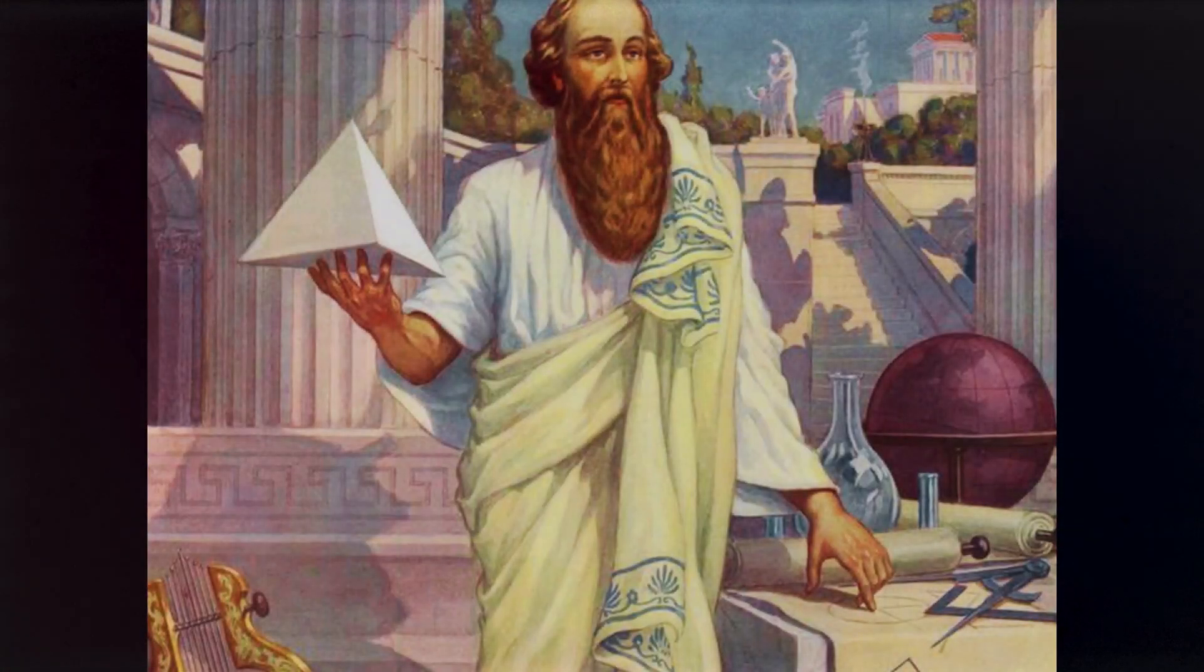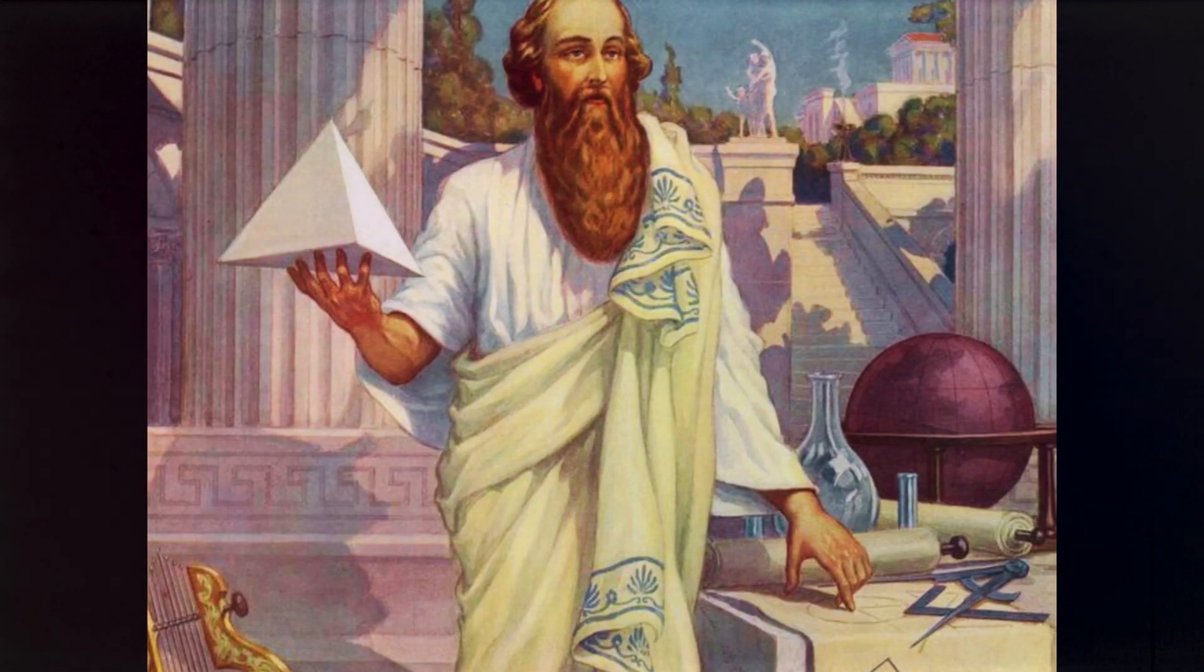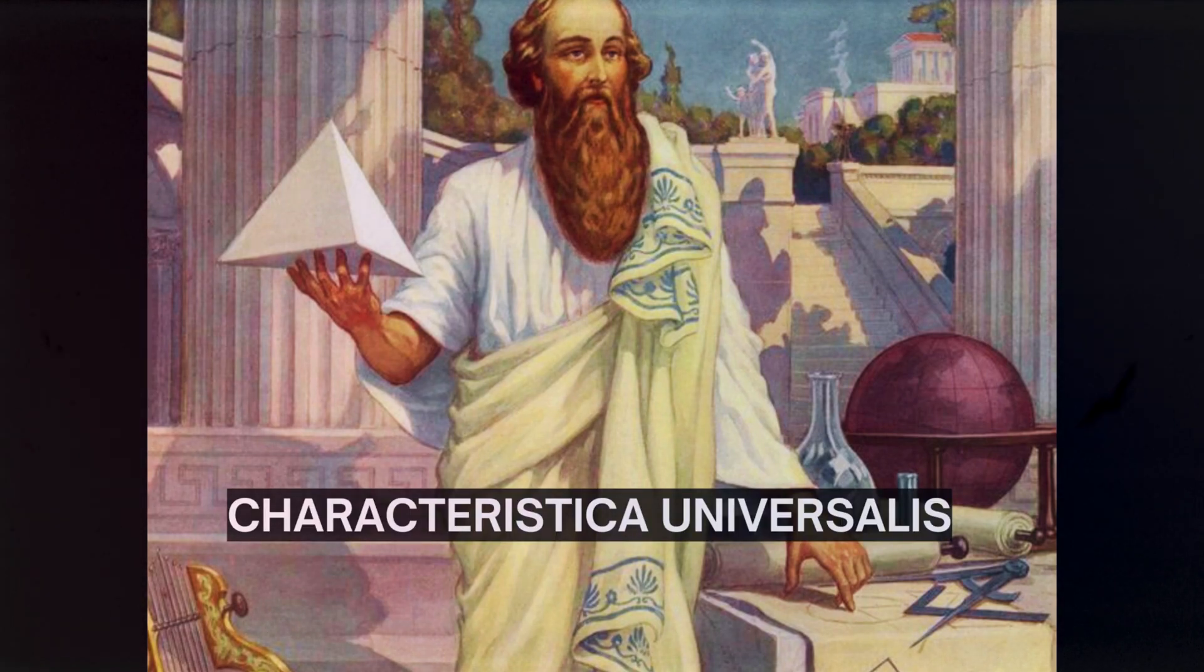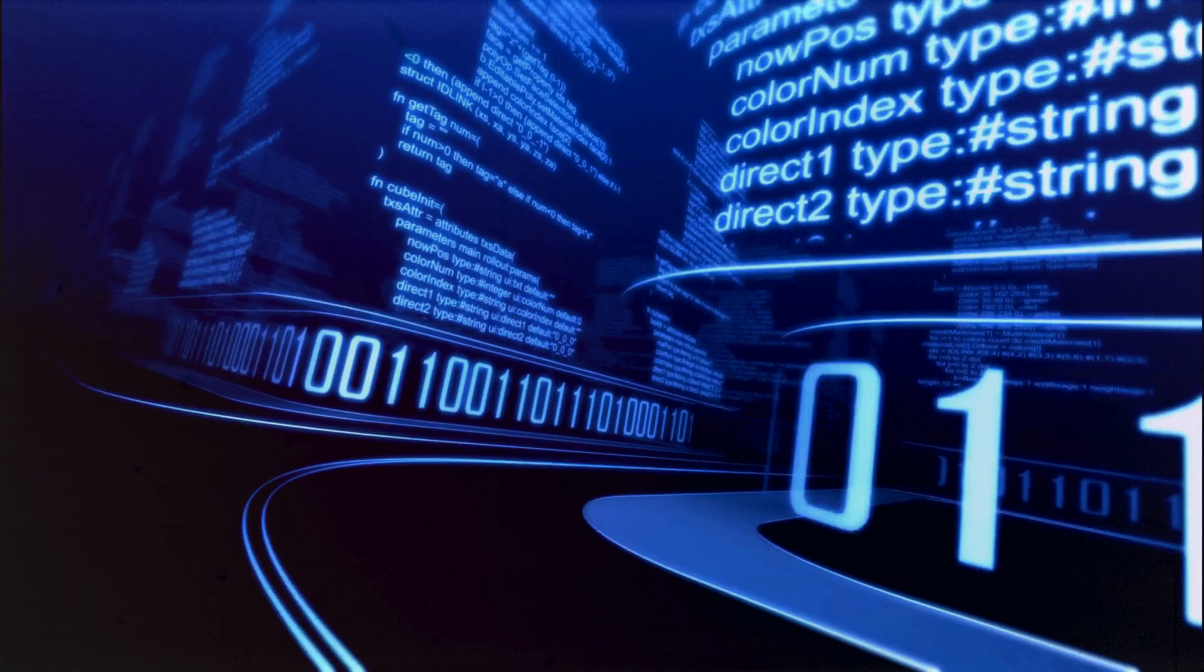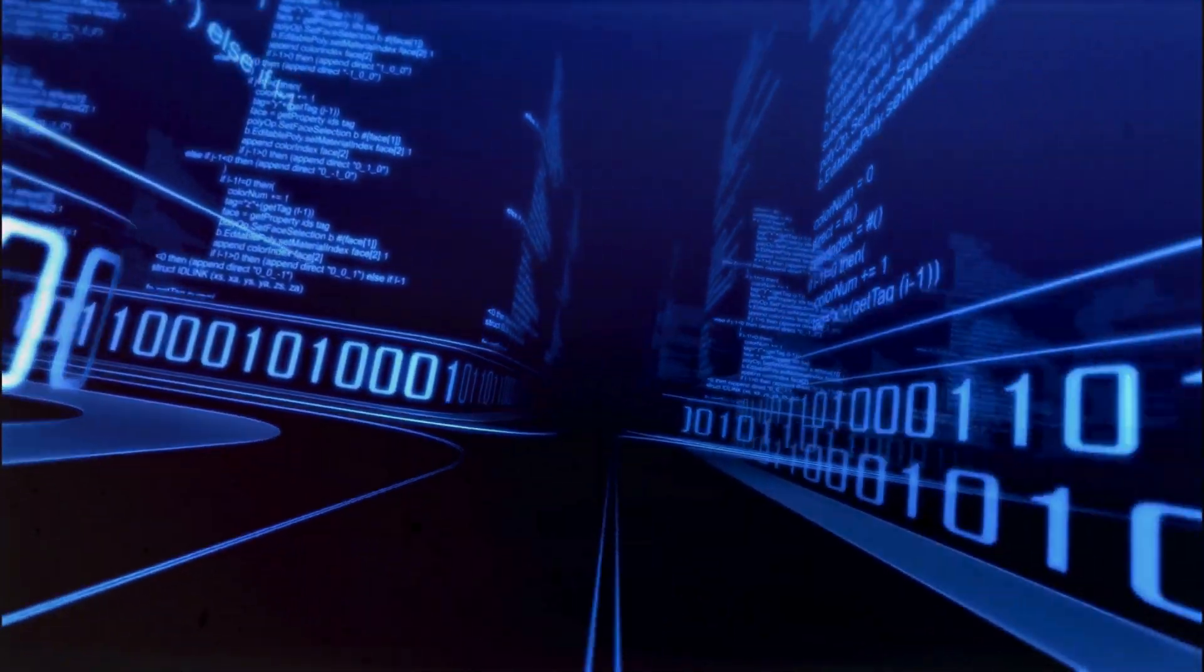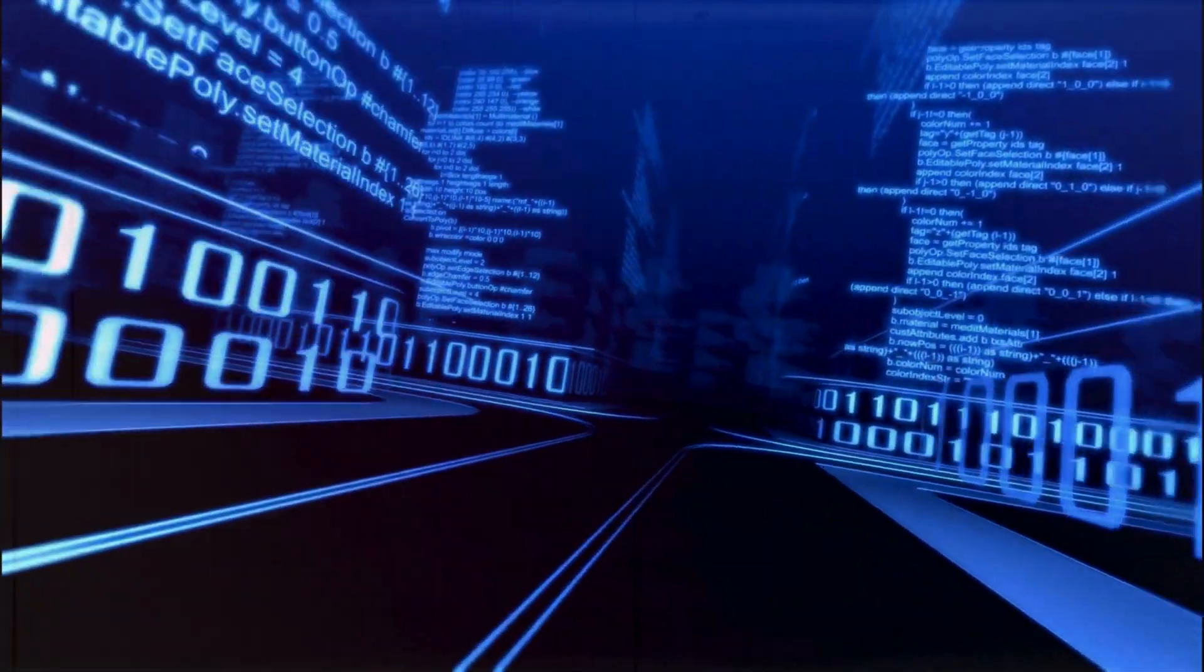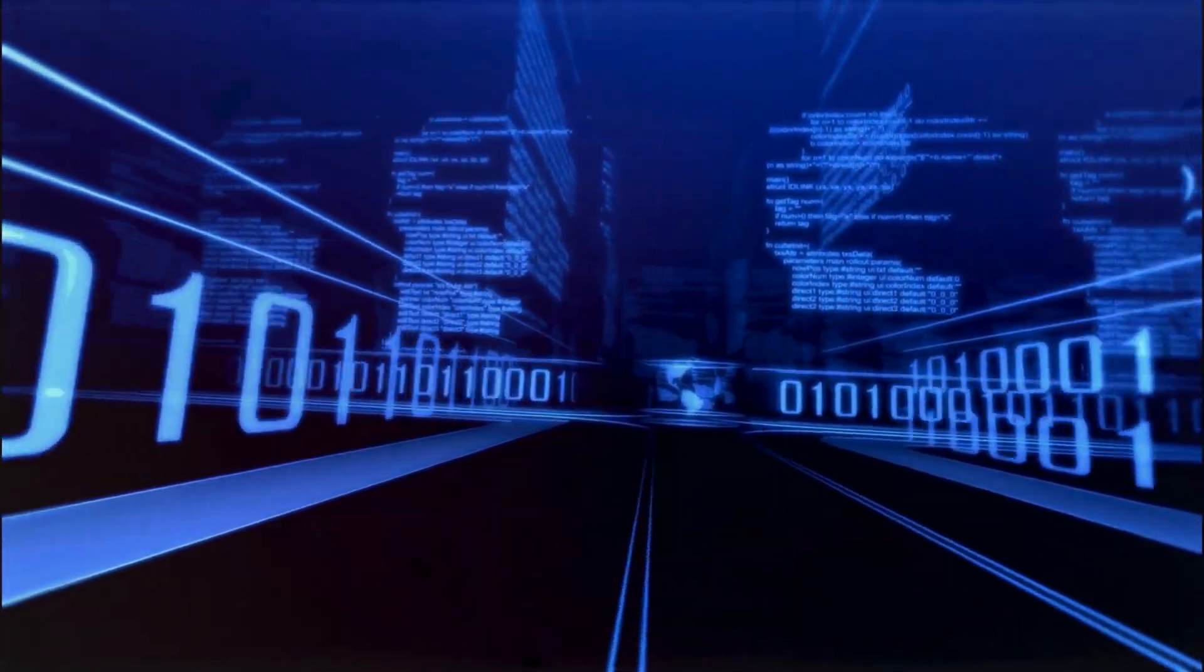Leibniz's contributions to logic and mathematics also reflect his deep belief in rational order. Long before the formal development of modern symbolic logic, he envisioned a universal language of thought, a characteristica universalis, that could encode all human knowledge into precise, calculable symbols. His dream was to create a system in which philosophical and scientific disputes could be resolved not through rhetoric, but through logical calculation. An idea that, centuries later, would inspire developments in computing and artificial intelligence.